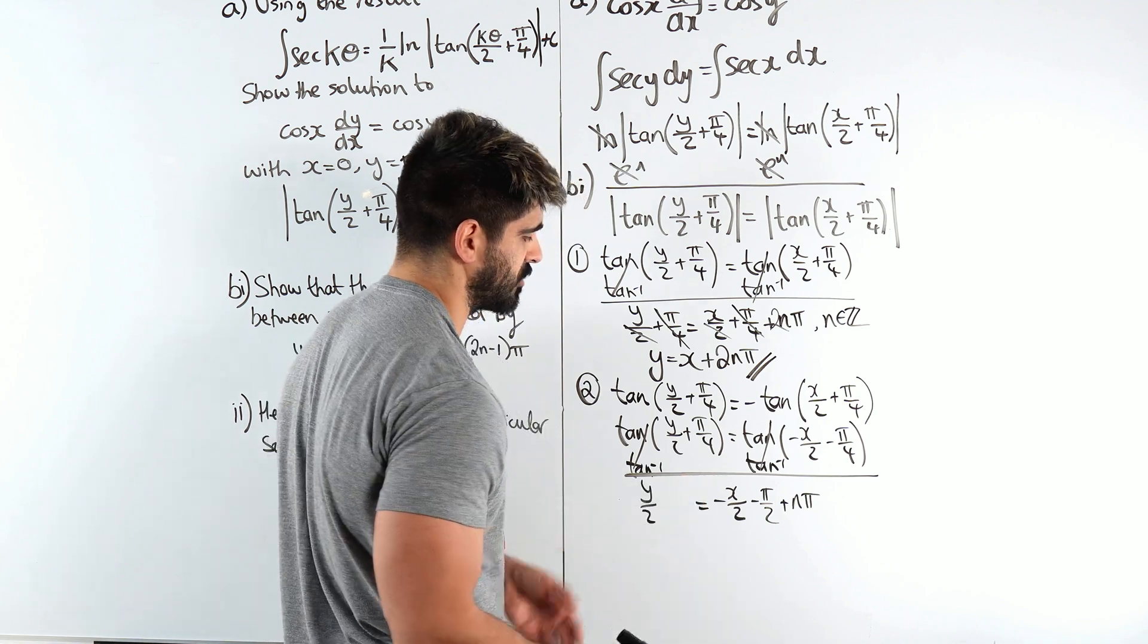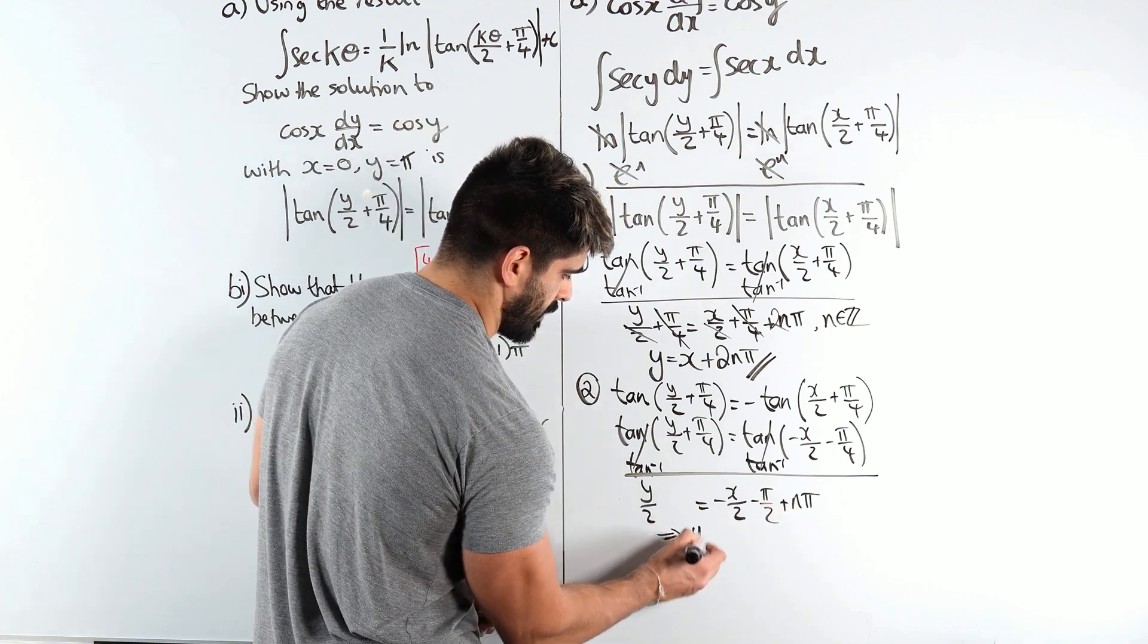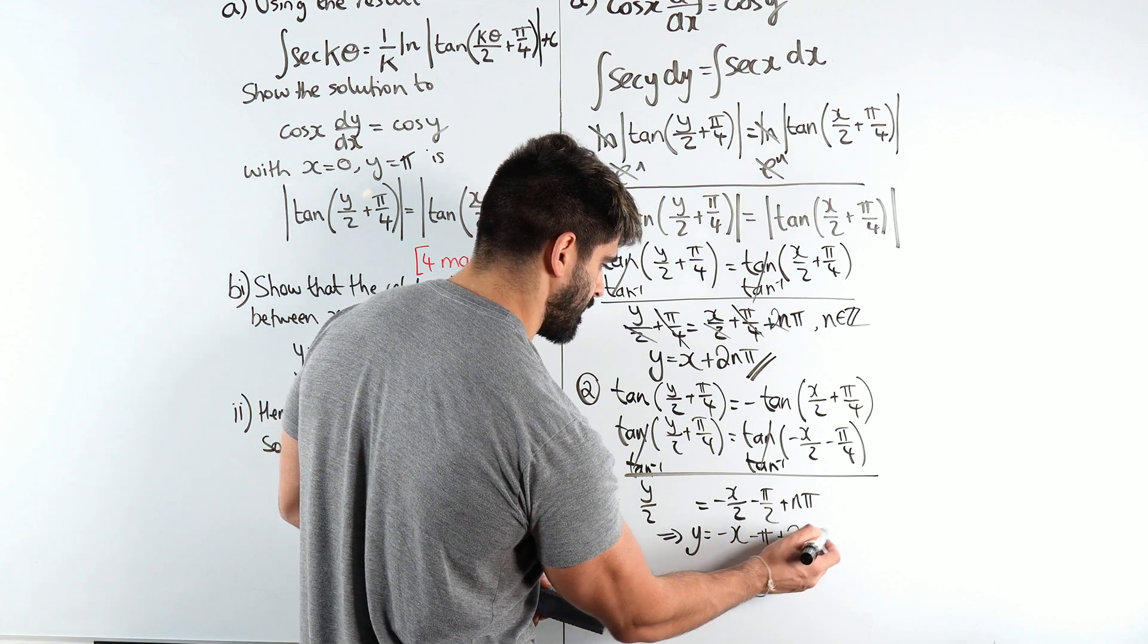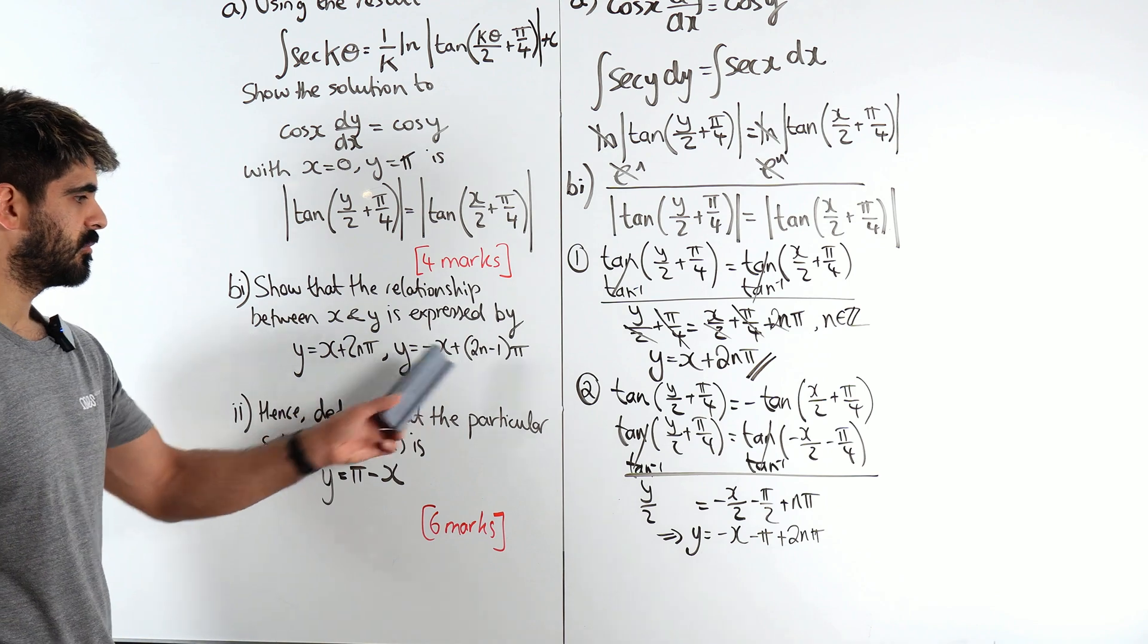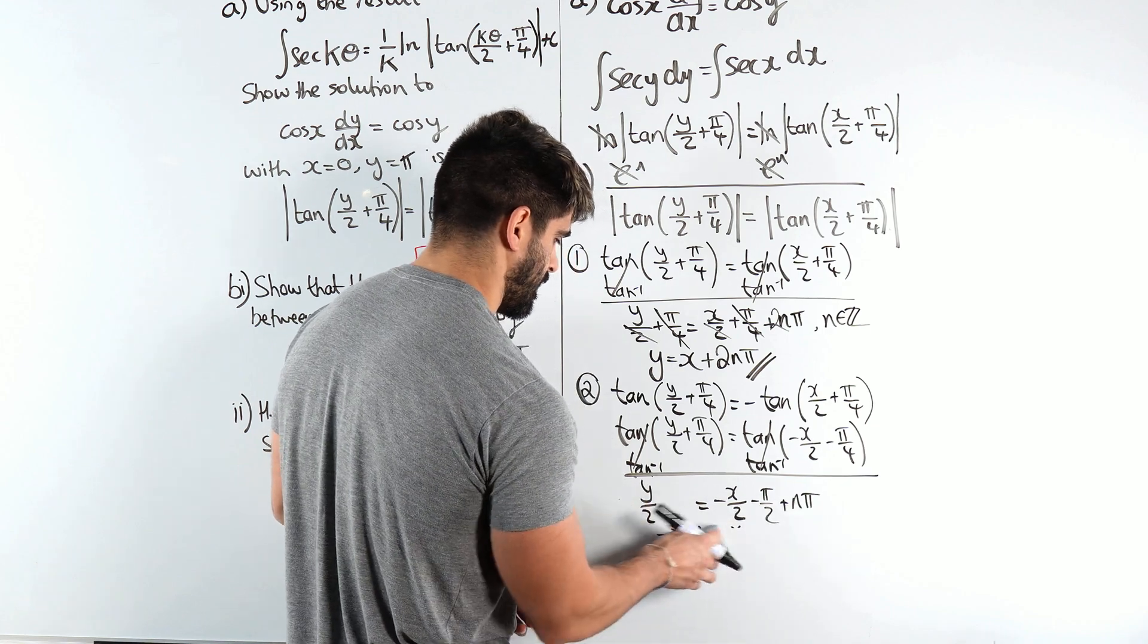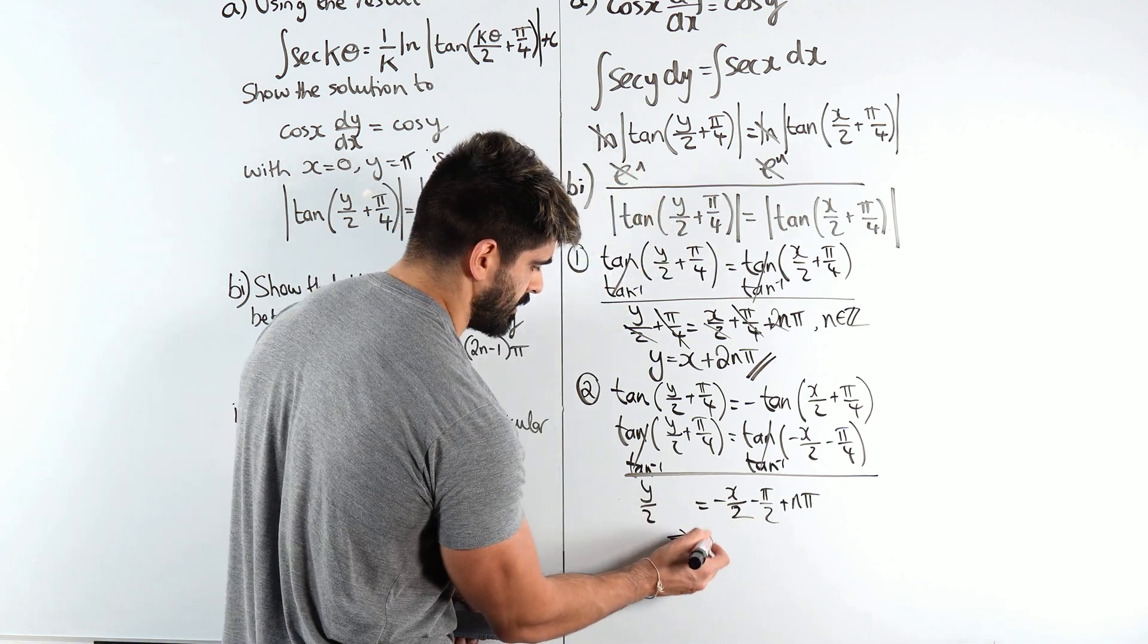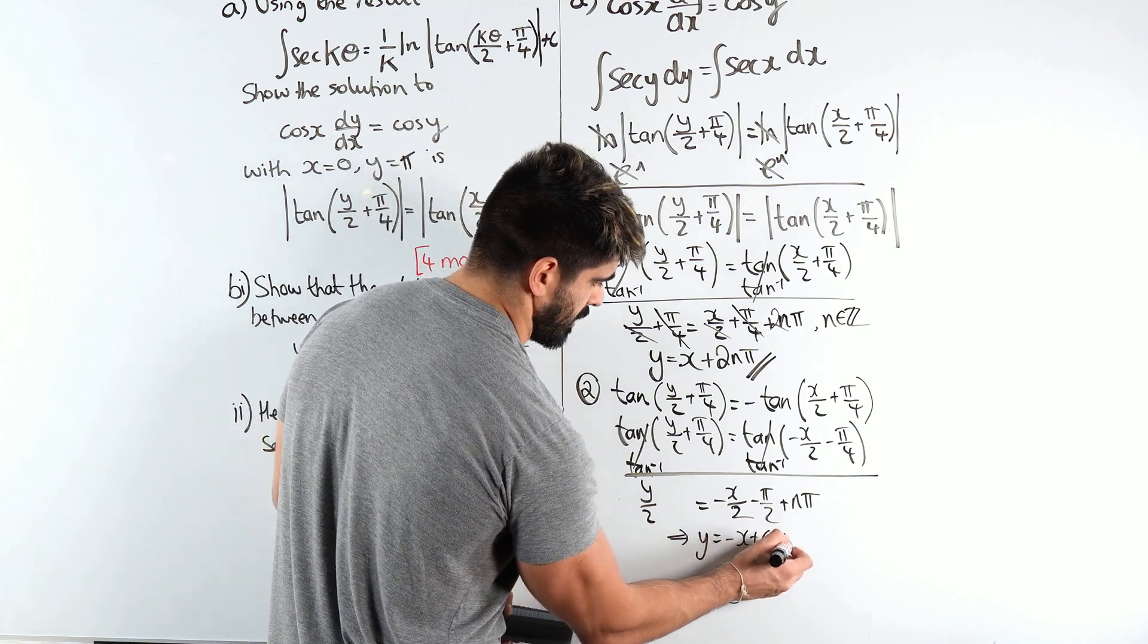So timesing through by 2, we get y is negative x, negative x minus pi plus 2n pi. Which when we factorize out pi, we get that other solution, which I'm just going to write down. So we got y is minus x plus 2n minus 1 pi.